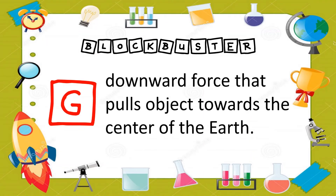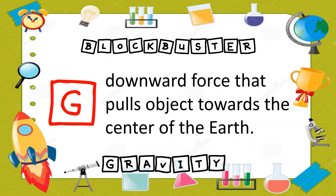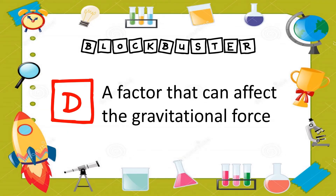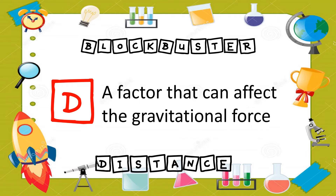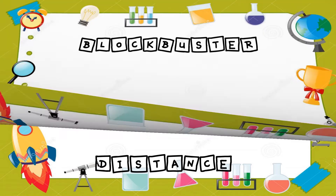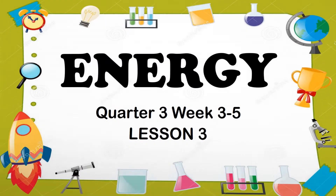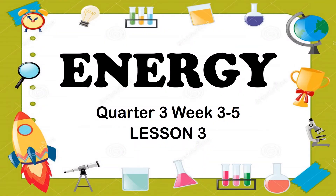What G is a downward force that pulls object towards the center of the Earth? Great! Gravity. What D is a factor that can affect the gravitational force? Distance. What M is a heavenly body with only 16% of the Earth's gravitational force? The answer is... Moon. Wow! Good job kids!